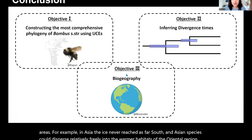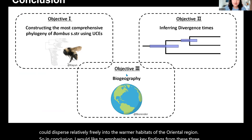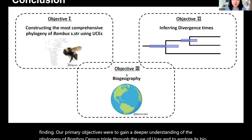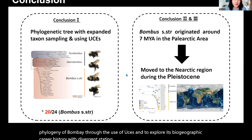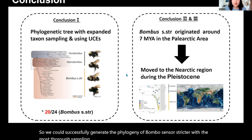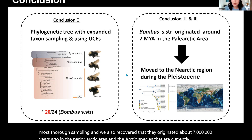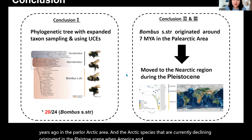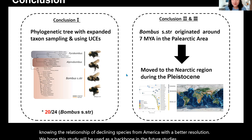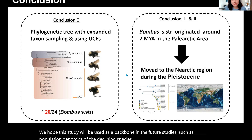In conclusion, I would like to emphasize a few key findings from this study. Our primary objectives were to gain a deeper understanding of the phylogeny of Bombus sensus stricto through the use of UCEs and to explore its biogeographical history with divergence dating. We could successfully generate the phylogeny of Bombus sensus stricto with the most thorough sampling, and we recovered that they originated about 7 million years ago in the Palearctic area. The Nearctic species that are currently declining originated in the Pleistocene when America and Asia were reconnected. By knowing the relationships of declining species from America with better resolution, we hope this study will be used as a backbone in future studies such as population genomics of the declining species or a broader phylogeny of genus Bombus.